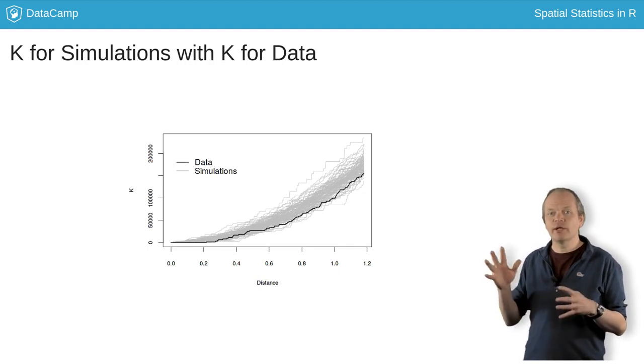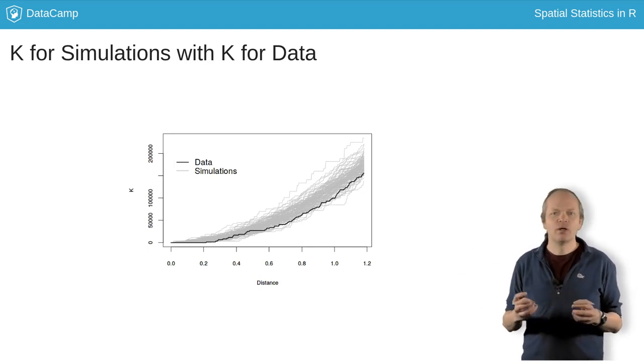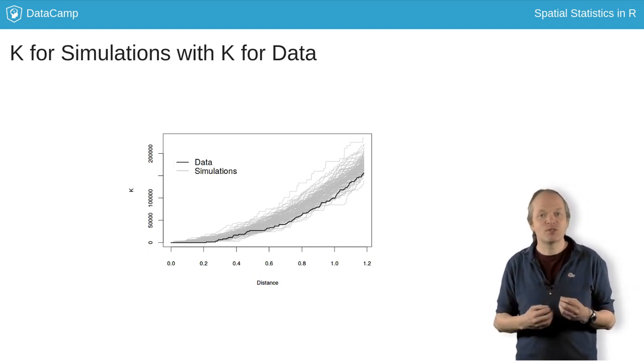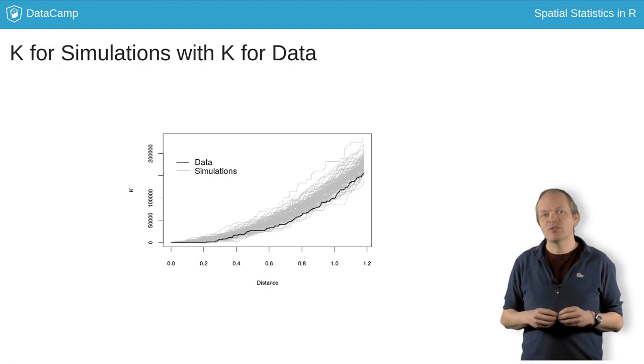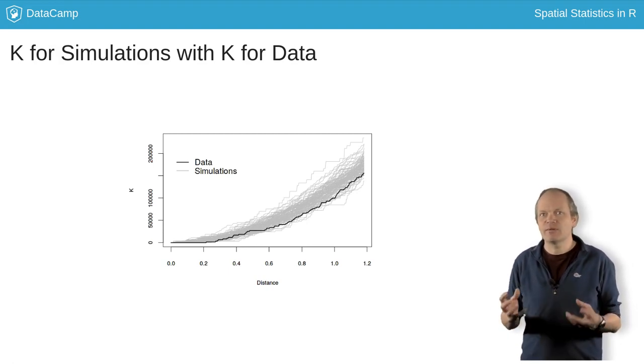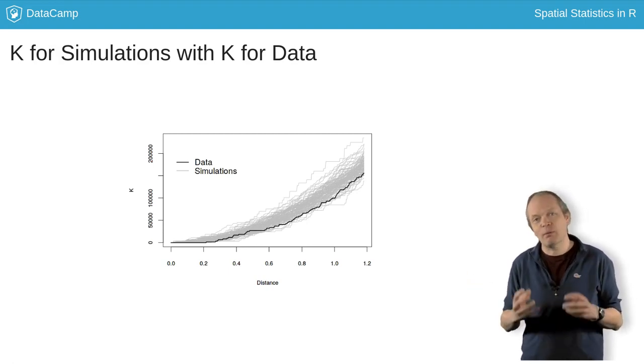This sort of test, where you generate replicates from your hypothesis, compute test statistics or functions, and compare with the statistic from the data, is called a Monte Carlo test. It's commonly used in spatial statistics because working out the theoretical distribution of things can be somewhat tricky.